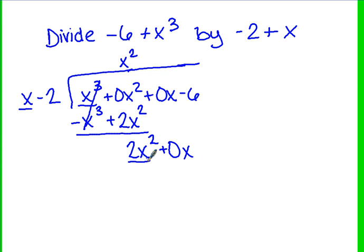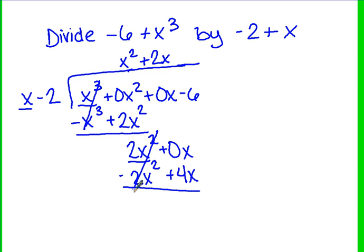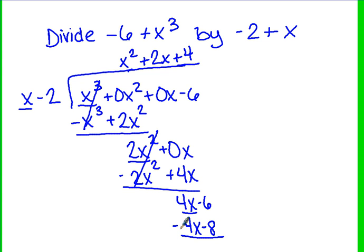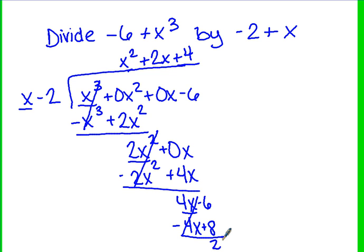Compare first terms: what times x gives 2x²? That's 2x. Add 2x to the quotient. 2x times x gives 2x², and 2x times -2 gives -4x. Subtract and change all signs: 2x² - 2x² is nothing, and 0x + 4x gives 4x. Bring down -6. What times x gives 4x? That's 4. Add 4 to the quotient and multiply: 4 times x is 4x, and 4 times -2 is -8. Subtract, changing signs: 4x - 4x is nothing, and -6 + 8 is 2. That's our remainder, so we write plus 2 over (x - 2). That is the final solution.